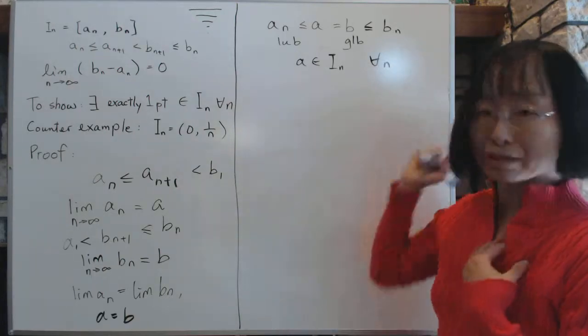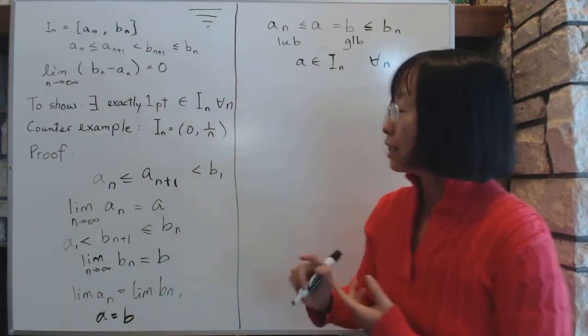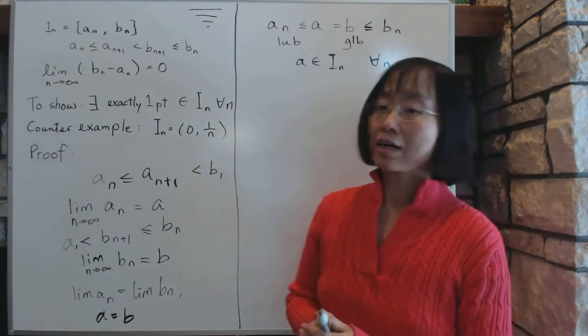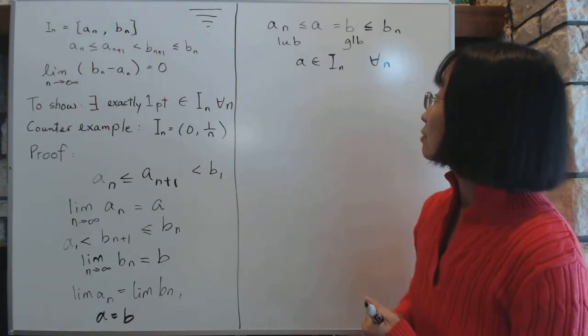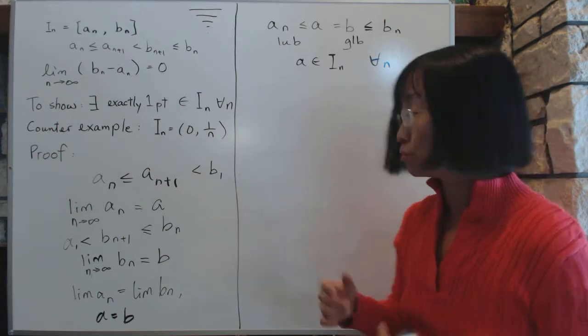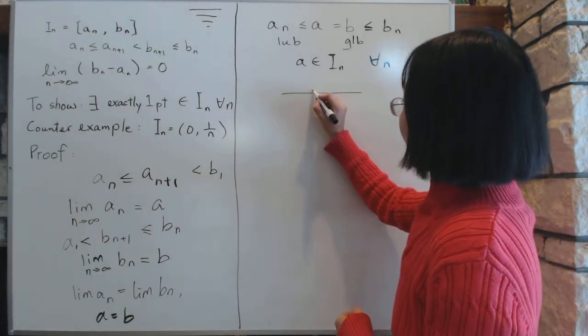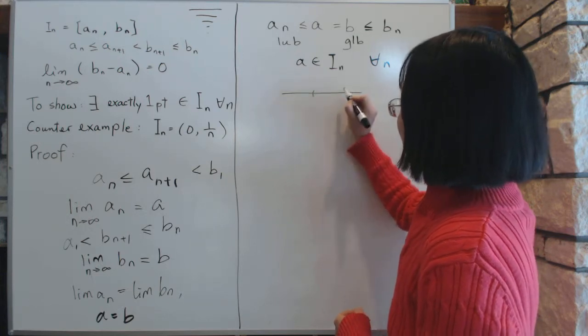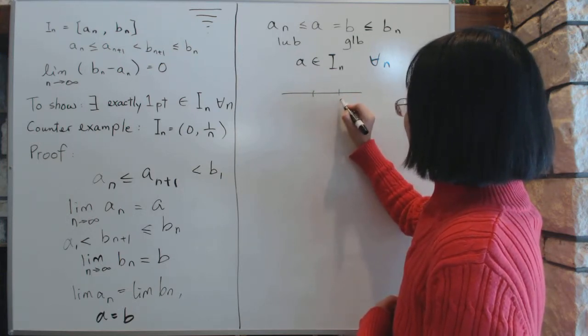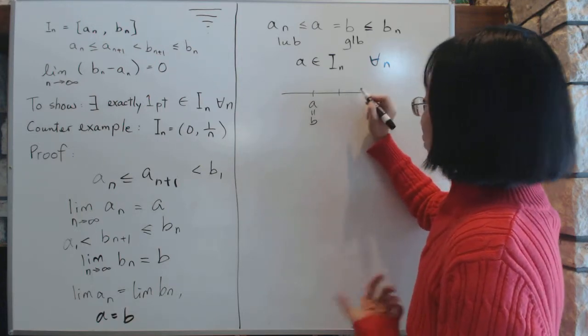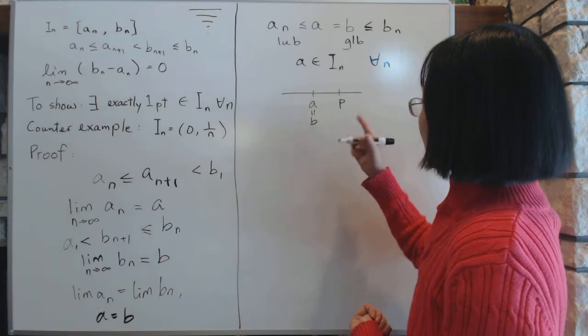Now, the next question is, how do we know that a is unique? So that there is only one, there is no more. So you have, on the line, you have a, which is inside I_n. But let's say, suppose there is something else. And here's a or b, they're the same thing. Suppose you have some other point, that's p.